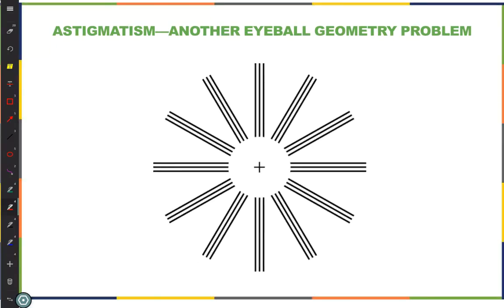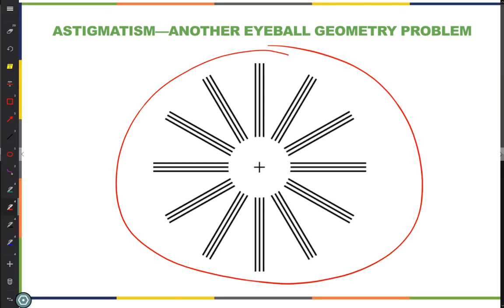They then do tests to determine more precisely what the axis is and how big the difference in focus is for the two. Astigmatism is essentially a non-spherical shape to your cornea. The correction is a non-spherical shape to your eyeglass lens — it has a different focal length for one axis versus the other, so when you combine them, each axis comes to focus on the back of the retina.